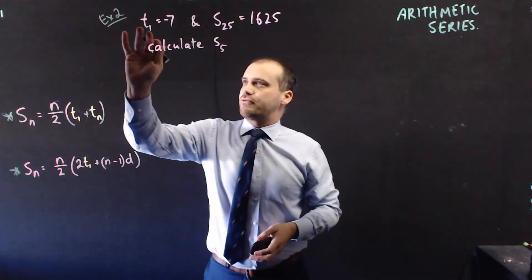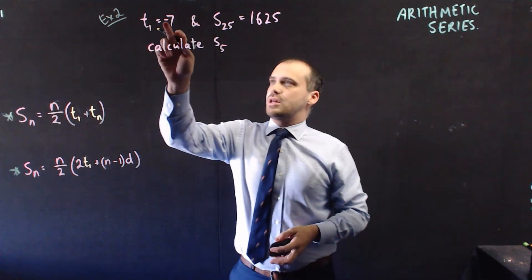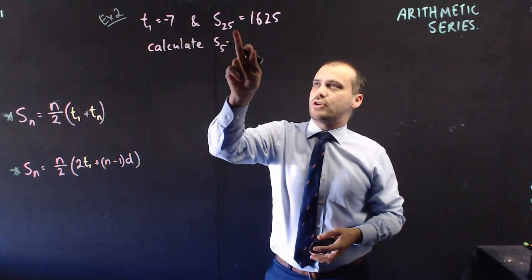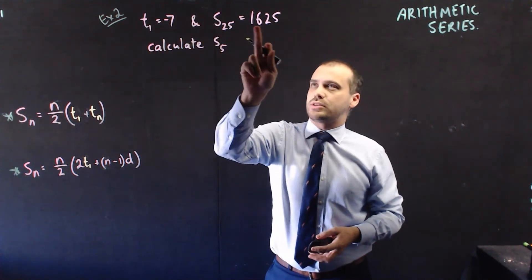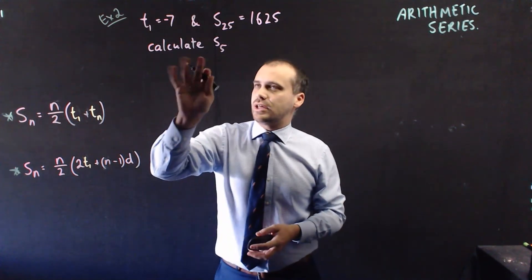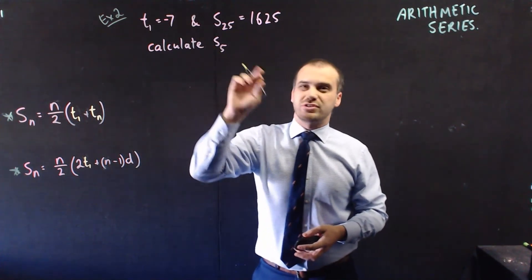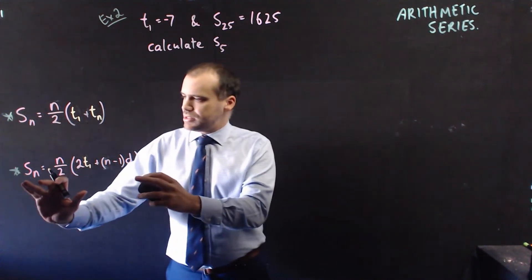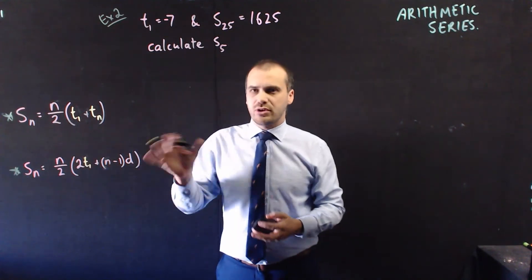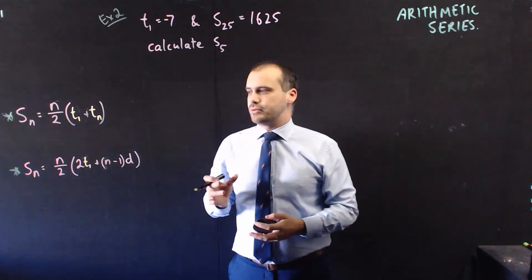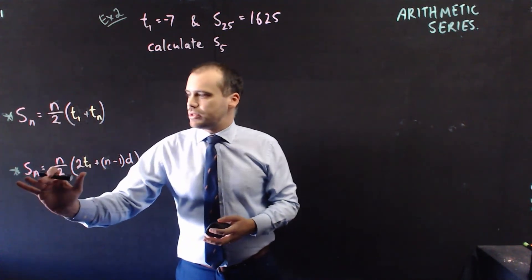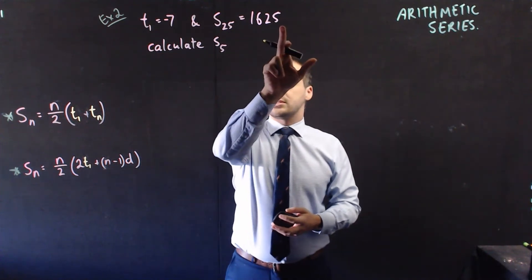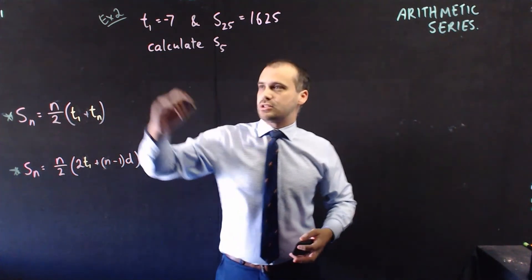I know that the first term is negative 7. I know that the sum of the first 25 terms is 1625. Calculate the sum of the first 5. So let's start with this formula and figure out what we know. We know that S25 is 1625.